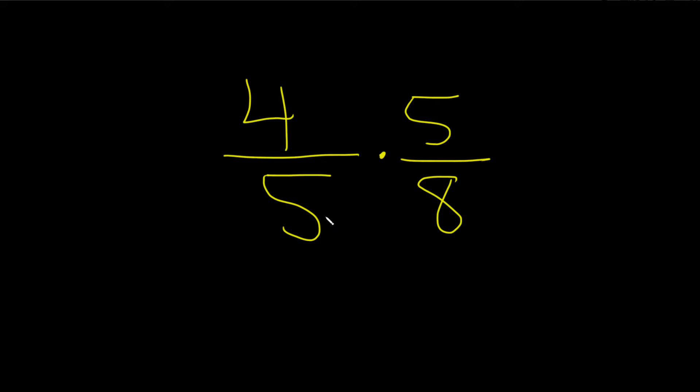So whenever you have fractions and you're multiplying, you can cancel diagonal terms. For example, the 5's here.